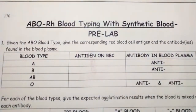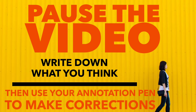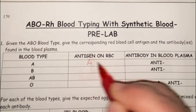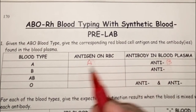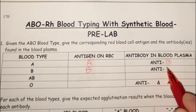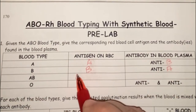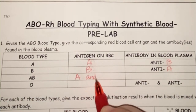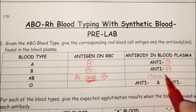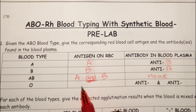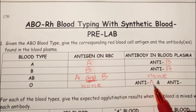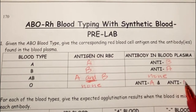Now let's take a look at the blood typing pre-lab. Pause the video and write down what you think. For blood type A, you should have written antigen A on the red blood cell and anti-B antibody in the plasma. Blood type B: antigen B and anti-A. If you're blood type AB, you have the A antigen and the B antigen, and nothing in the plasma — write none. For O blood, no antigens on the red blood cell — write none — but you do have anti-A and anti-B antibodies floating around in your plasma.